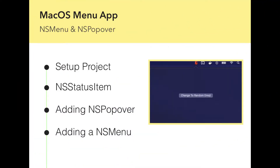In this tutorial we'll be building a simple macOS menu application that can be used as a template. We'll be covering how to set up your project, how to add a status item to the system status bar, how to connect both an NSPopover and NSMenu to our status item, and finally how you can extend upon this in the future.